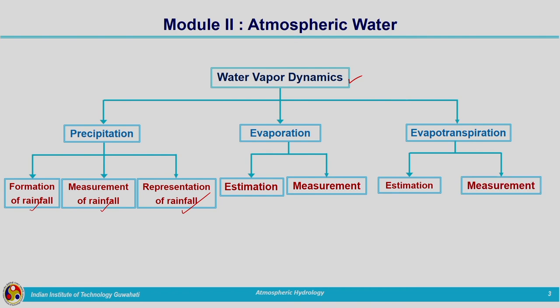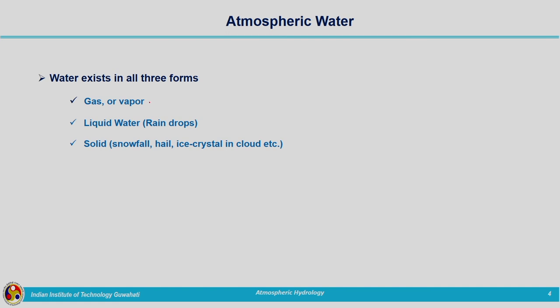Once we get complete knowledge about precipitation, evaporation, and evapotranspiration, we will get an idea of how water vapour can be modelled in the atmosphere. Atmospheric water can be in vapour form, in liquid form as water droplets present in the atmosphere, and also in solid form when we have snowfall or hail.